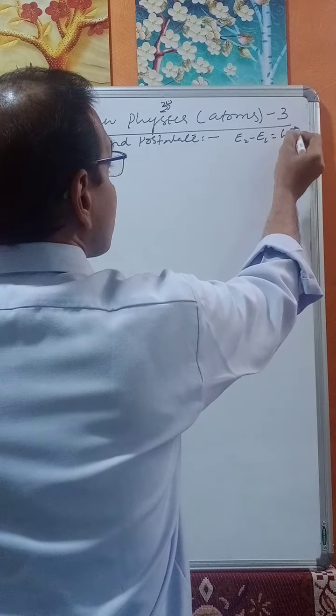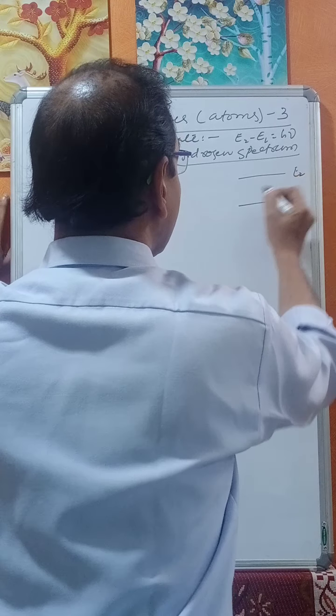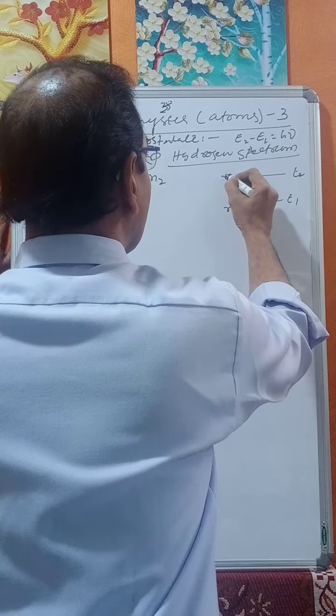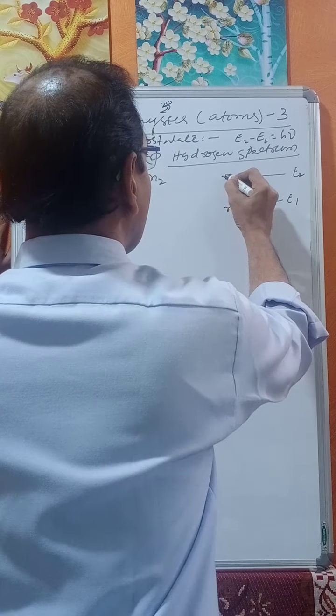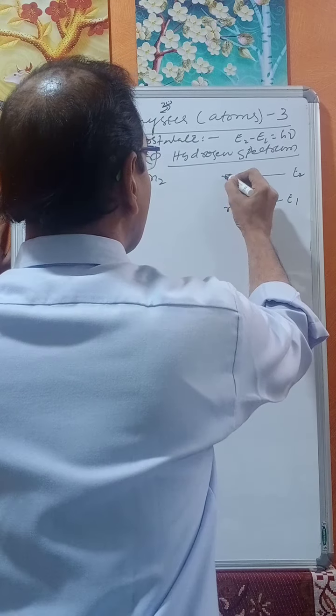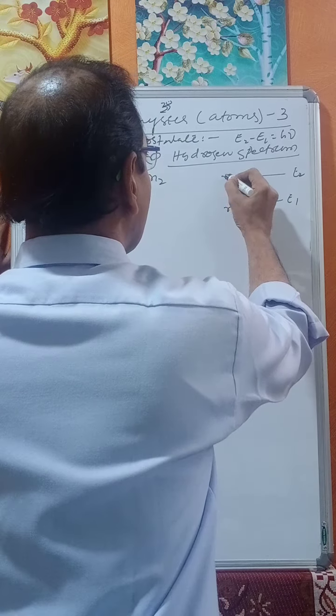Let us say E1 is the energy of the electron in level n1 — the lower level — and E2 is the energy in the higher level n2.